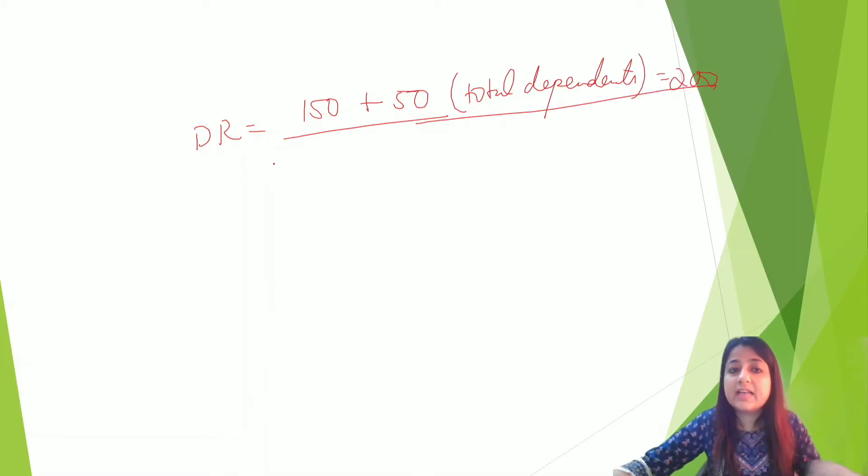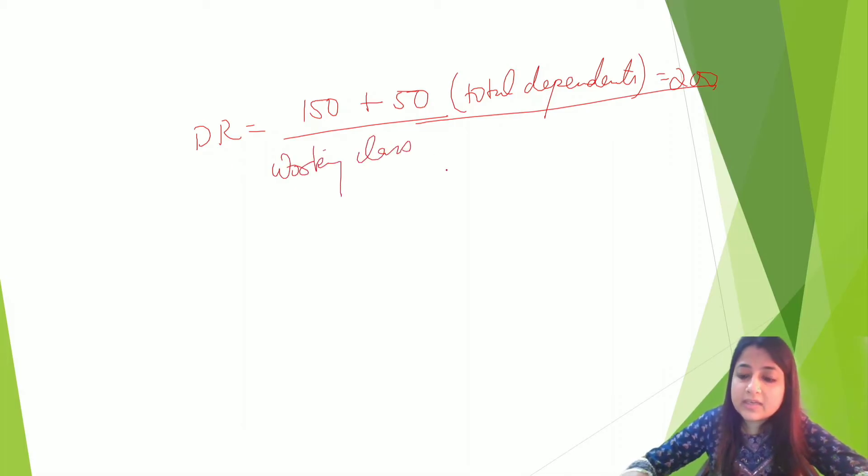What is the working class? Working class would be total population is 1000, so 1000 minus 200 which will be 800.